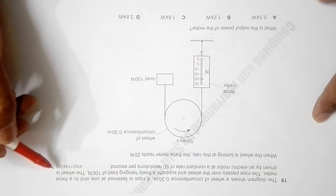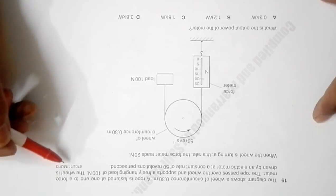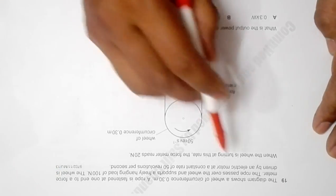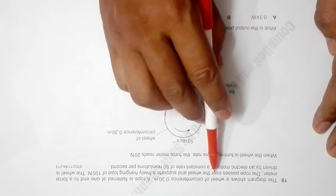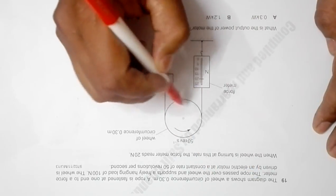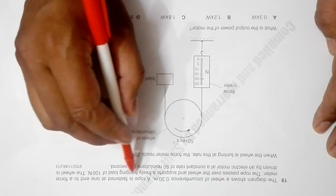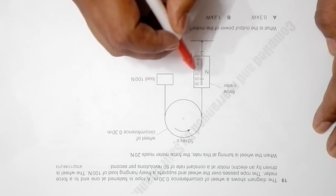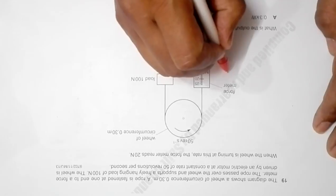This is the question from May June 2013 paper 1, question number 19. The diagram shows a wheel of circumference 0.30 meters. A rope is fastened at one end to a force meter, which is right now reading 20 Newtons.